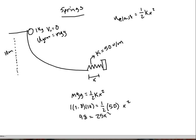So 98 divided by 25 gives me 3.92 equal to x squared. Square root both sides and you get a compression of 1.98 meters.